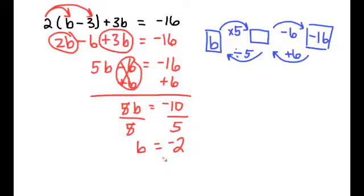So let's check that. When you check a more complicated equation, it's really important that you start at the very beginning because you might have made a mistake when you did the distribution. So I'm going to start right back at the beginning. 2 times (b is negative 2 minus 3) plus 3 times negative 2 equals negative 16. So I'm going to use order of operations. It says we do the work in the parentheses first.